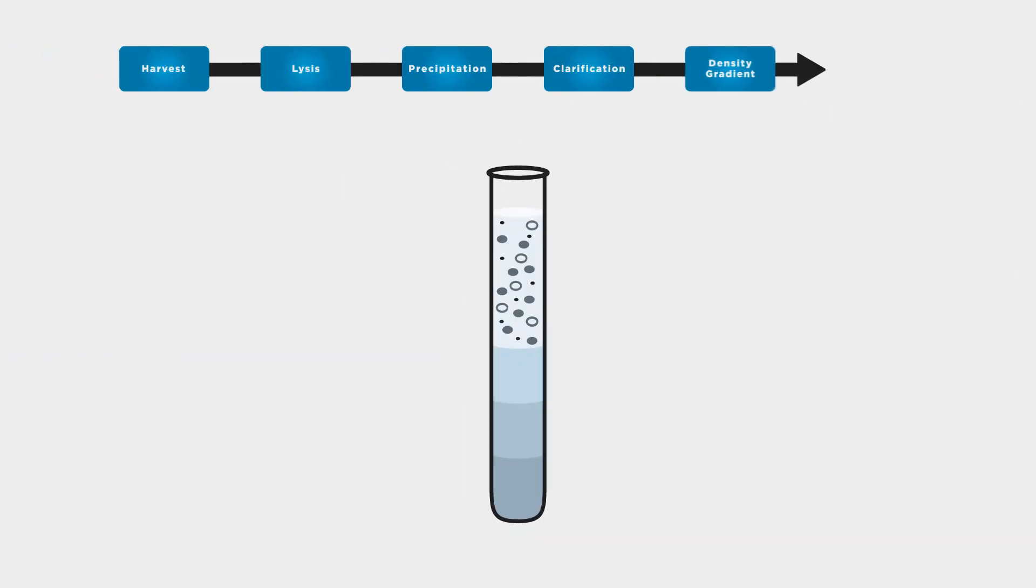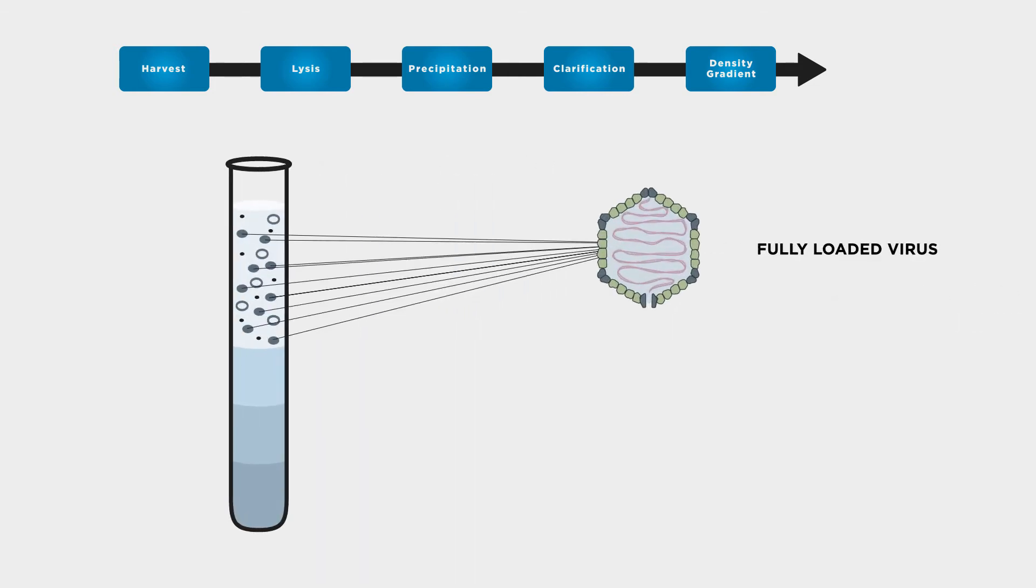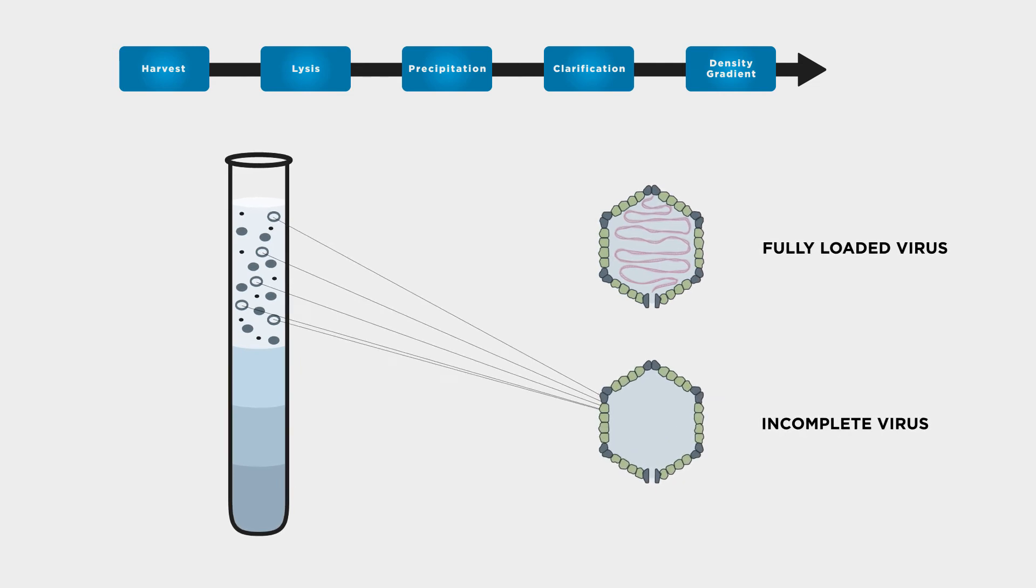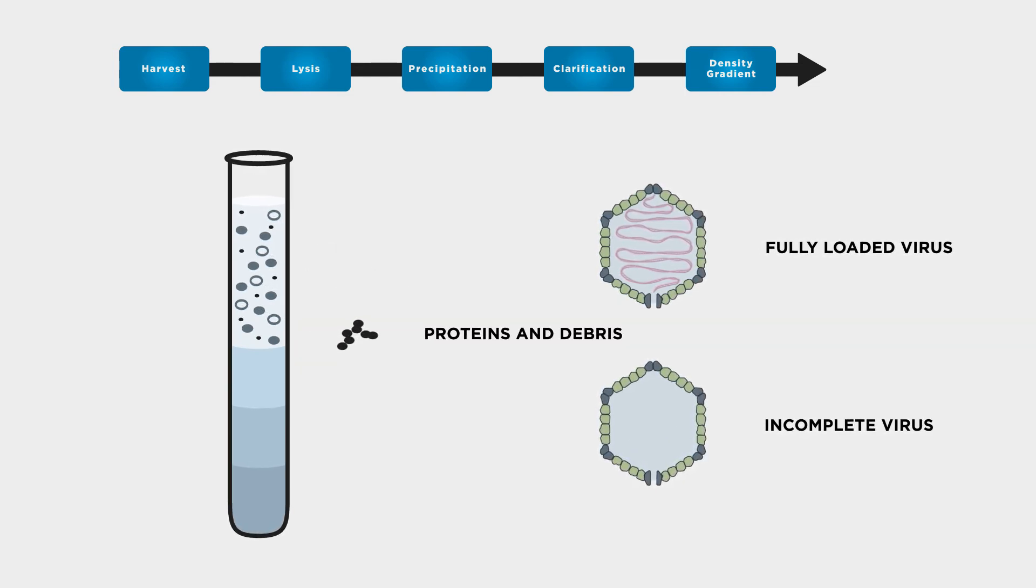Density gradient ultra-centrifugation is used to isolate active virus on the basis of its size and density, with the additional benefit of purifying fully loaded virus from empty particles, incomplete virus, proteins, and any residual cellular debris.